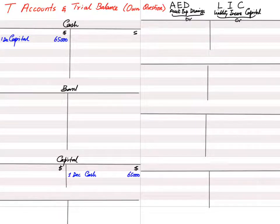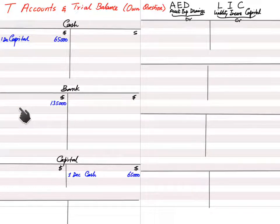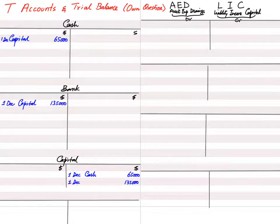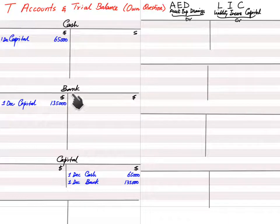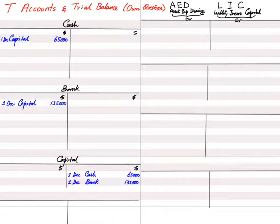Similarly, on 1st December we invested $135,000 into the bank account. The bank account is debited with the reference of 'capital,' and the capital account is credited with the reference of 'bank.' Capital is increasing because of both cash and bank. Writing 'bank' in the bank account's reference, or 'capital' in the capital account's own reference, would be wrong — always use the opposite account's name as the reference.